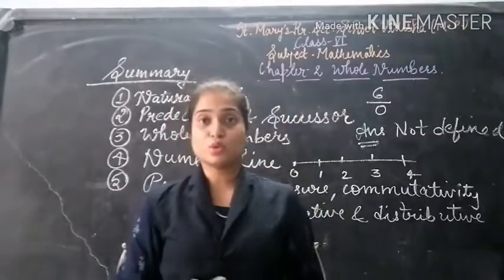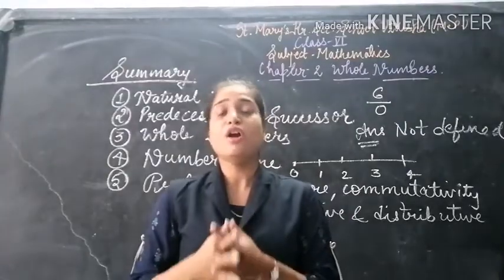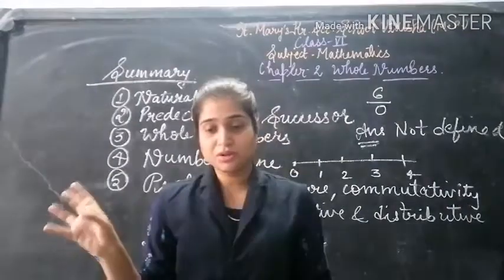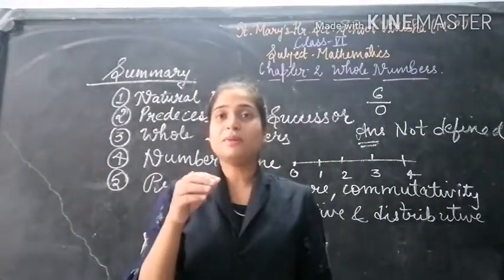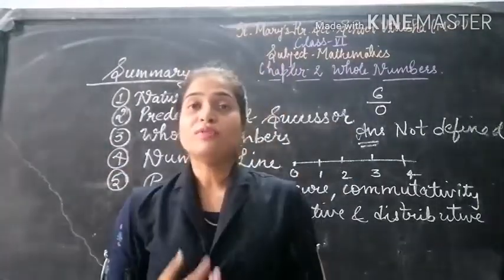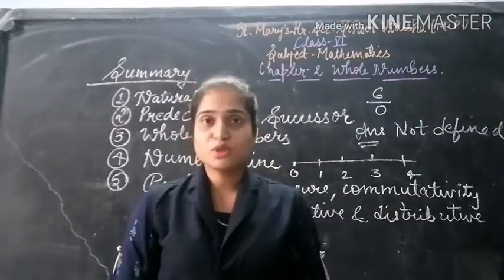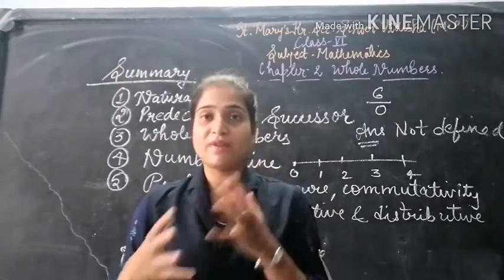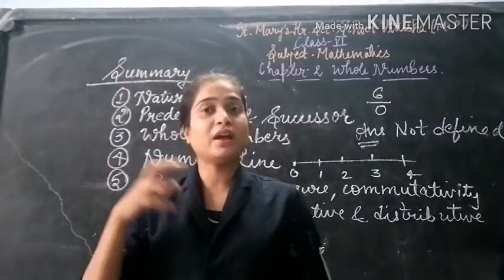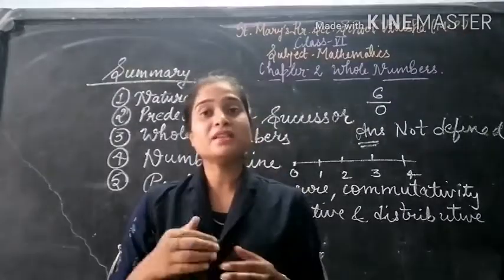For associative property, addition and multiplication are associative for whole numbers. And the same for distributive property — multiplication over addition can be done in whole numbers. Commutativity, associativity, and distributive properties are very useful for whole numbers. We can simplify solutions using these properties, and they automatically make our solutions easier, even when we don't realize we are using them.